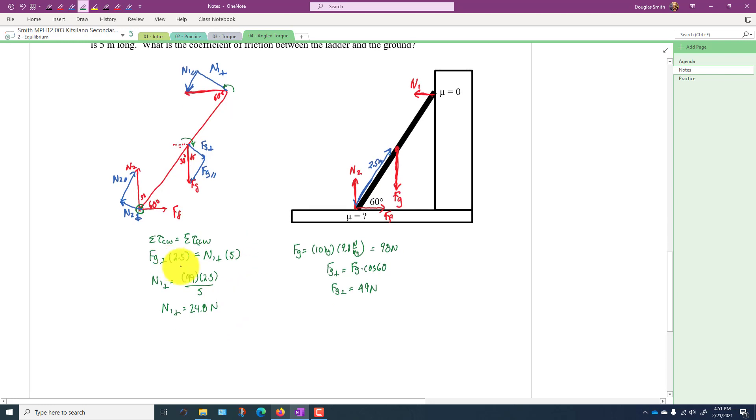Okay, so we know N1 perpendicular now. Actually at this point we already know what the force of friction is, because we know that the sum of forces in the x-direction has to add up to zero, and there are only two horizontal forces on this. N1 is equal to force of friction, so therefore force of friction is 24.5 newtons.